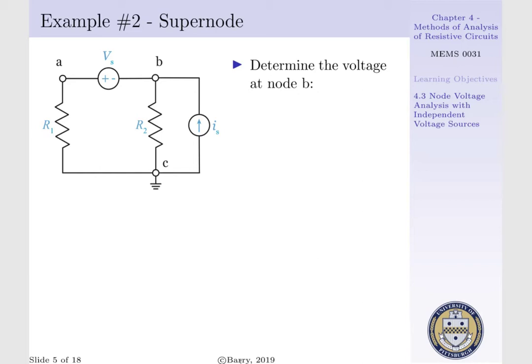Let us consider example 2, where we want to determine the voltage at node B. What we have to recognize about this circuit is we have a voltage source existing between nodes A and B, both of which are not designated as our ground.